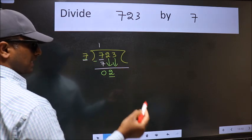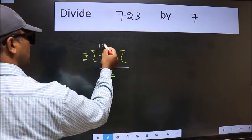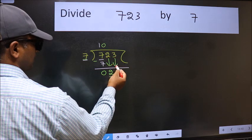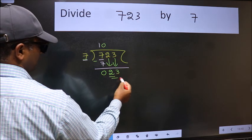And the rule to bring down the second number is we should put 0 here. Then only we can bring this number down. Now 23.